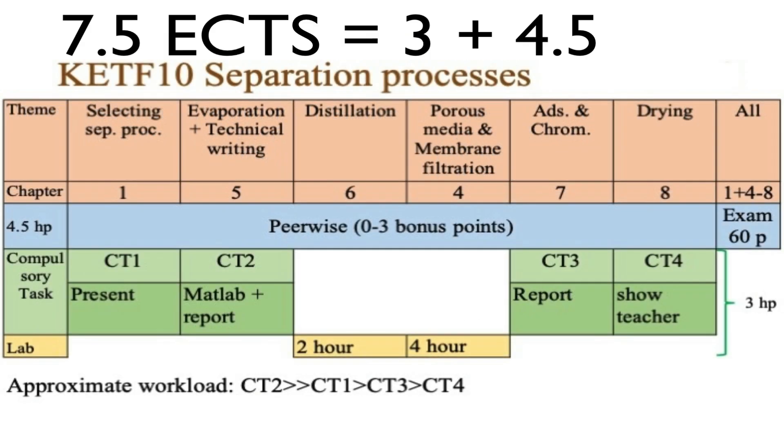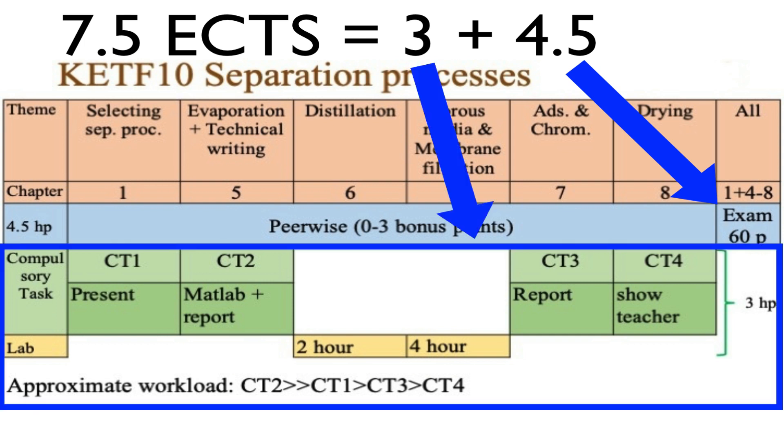Of the 7.5 ECTS credits, students receive 4.5 credits when passing the exam covering all themes. Students can get bonus points to the exam by writing and answering questions in Peerwise. The remaining three credits are received when passing compulsory tasks and labs.